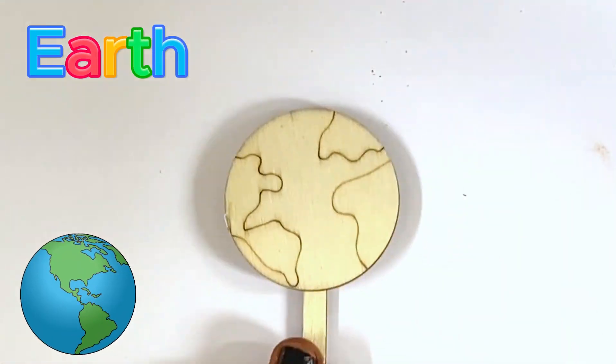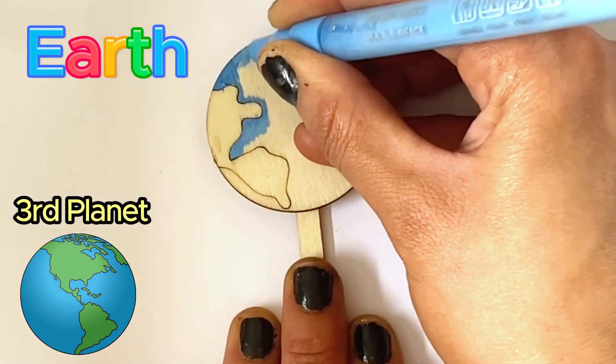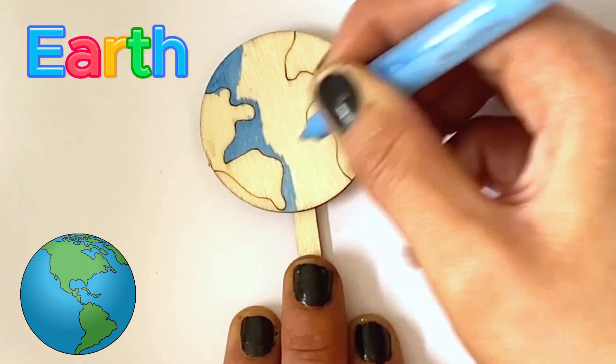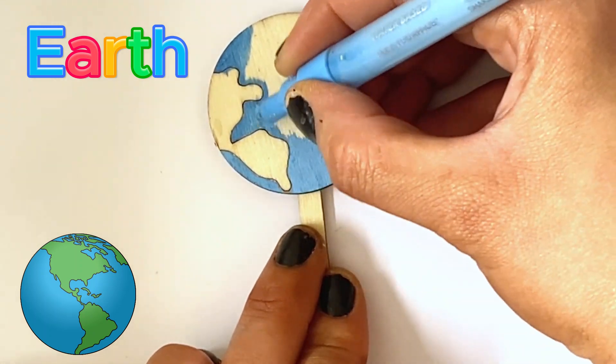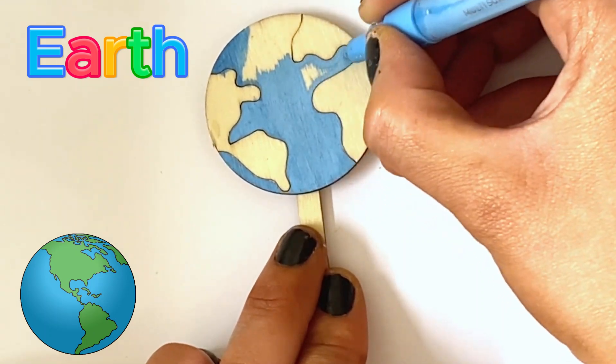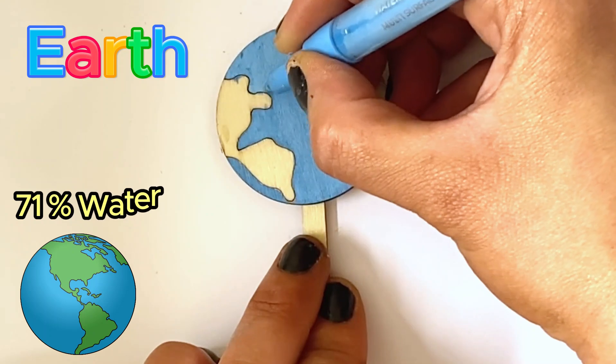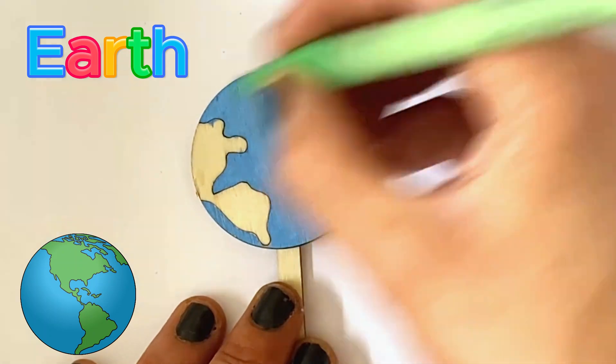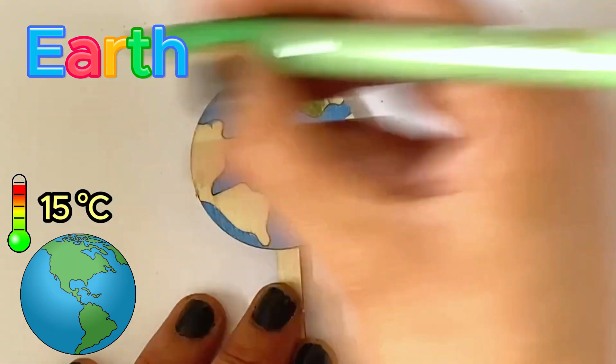The next planet we're going to paint is our home planet Earth. It is the third planet from the Sun and the planet we all call home. It is the only planet we know that has organic life on it, as it sits in a perfect location in space that allows life to grow. And we have called this the Goldilocks zone. 71% of our home planet is covered by water, whilst the other 29% is land. The average global temperature on Earth is 15 Celsius.